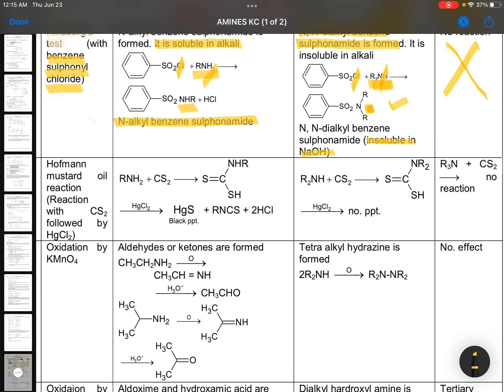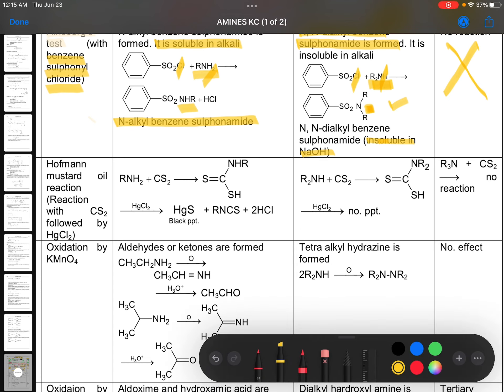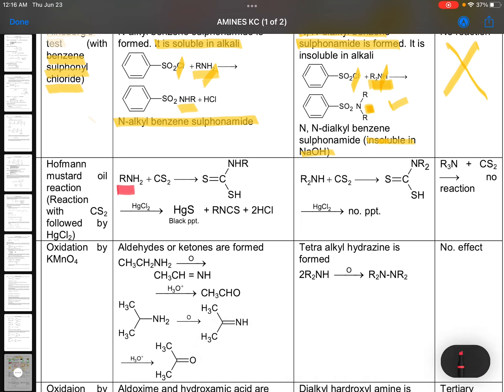Hofmann mustard oil reaction. Mustard oil reaction means you are not preparing any mustard oil. Smell aata hai. You will get the smell like mustard oil smell. When primary amines treated with carbon disulfide, an intermediate is formed which treated with HgCl2 forms a black precipitate. And R-N-C-S. R-N-C-S is formed. Alkyl isothiocyanate. Alkyl isothiocyanate is formed.